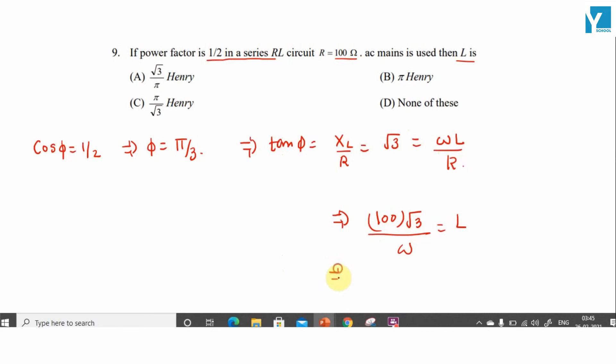So this implies L comes out to be root 3 divided by phi henry. So looking at the options, option A is the right answer.